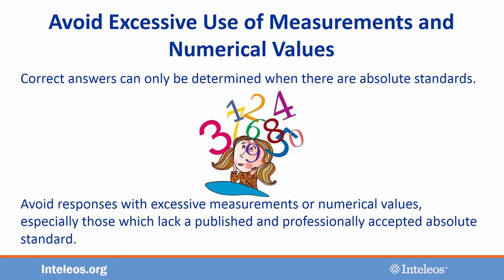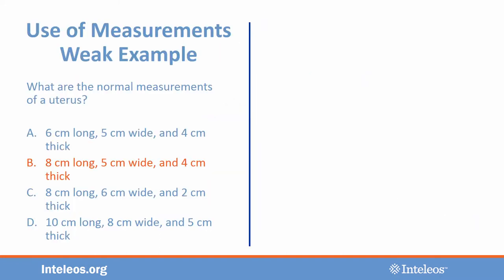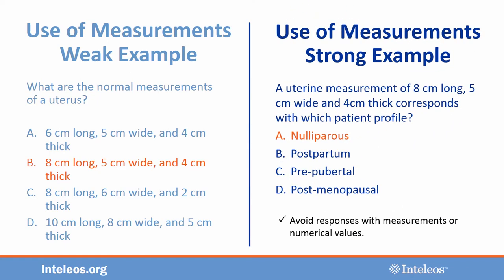Avoid excessive use of measurements and numerical values — or more precisely, be careful how you use numbers, and be sure you are only asking about a professionally accepted absolute standard. Otherwise, it can be problematic. For instance, asking what the normal measurements of a uterus are is troubling because uterine size can depend on many factors, and one could easily make a case for more than one answer choice being the correct key. If you have a measurement that every entry-level candidate should know, it is better to include that measurement in the stem so that you are talking about a specific patient profile, rather than all women everywhere.